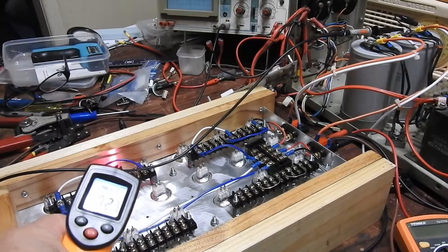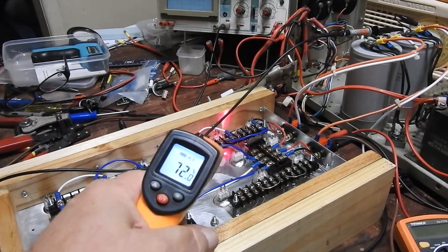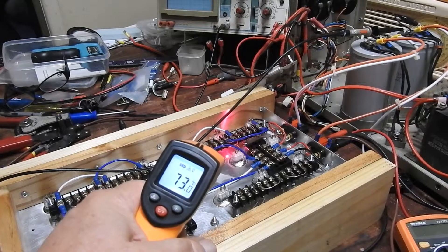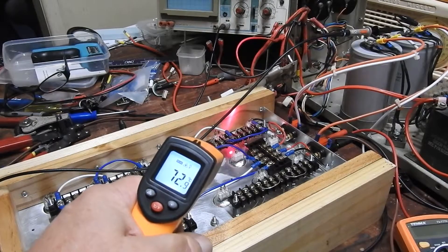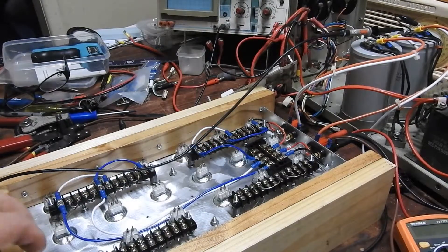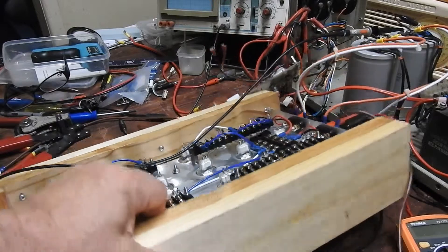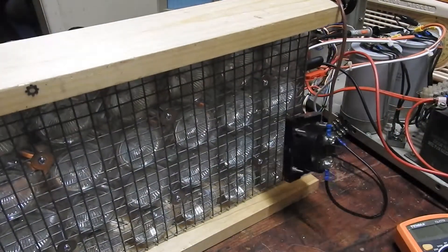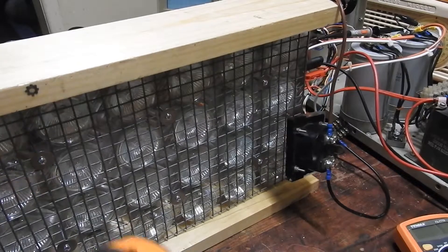There we go, more like it - 60 degrees there, 70 under, 70 amongst the bulbs, 73. Yeah, so definitely metal is required.